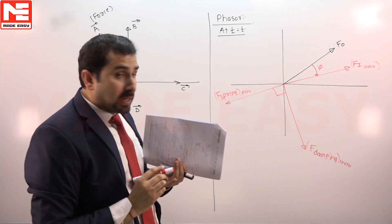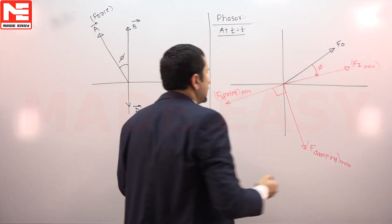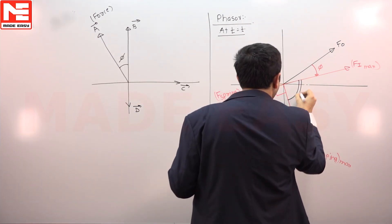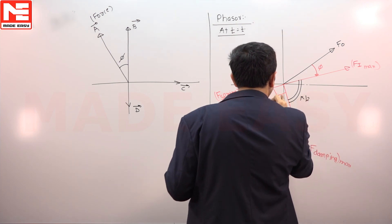So this is your phasor diagram. We know very well because if this angle is 90, this will also be 90.